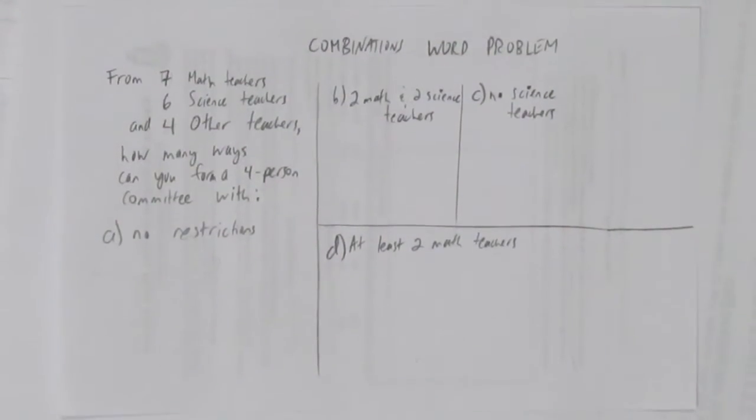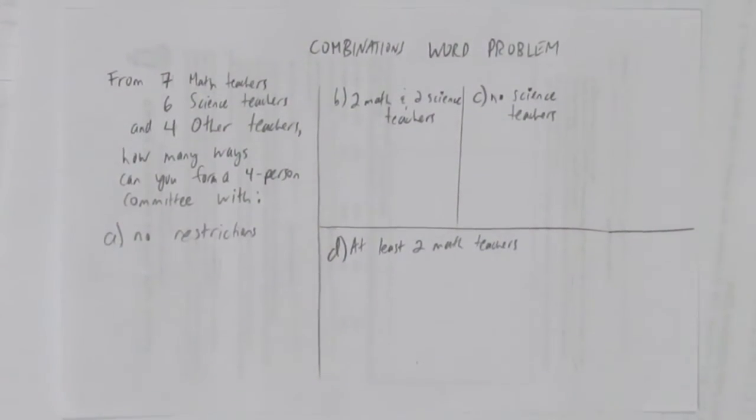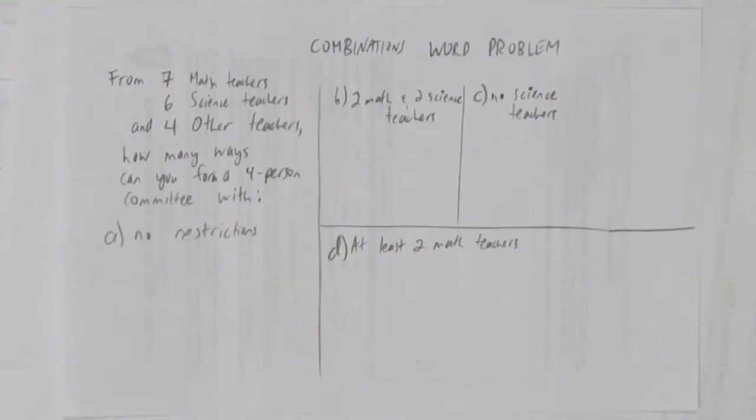In this video, we'll look at a combinations word problem. Suppose you had seven math teachers, six science teachers, and four other teachers.